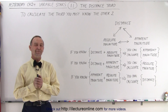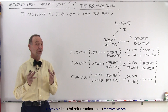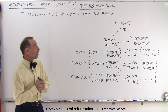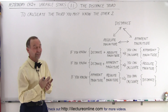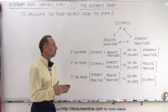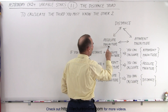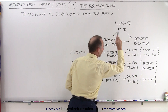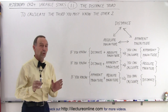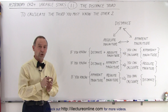Welcome to our lecture online. This concept is so important it warrants its own video. I called it the distance triad. What are we saying here? There are three things: distance, absolute magnitude, and apparent magnitude. In order to know the third, you must know the other two.